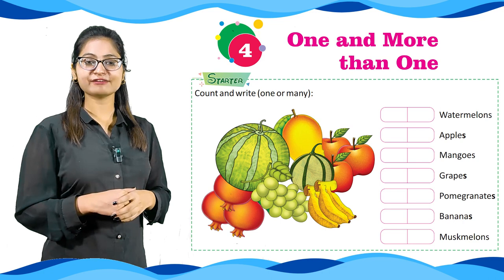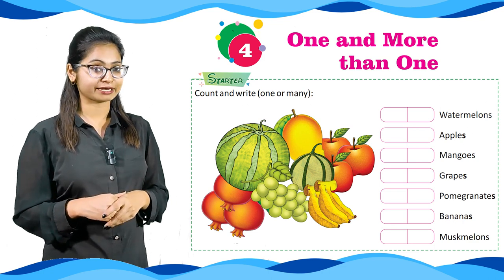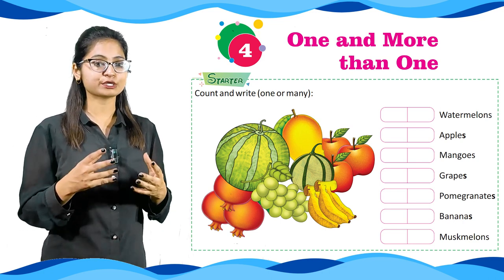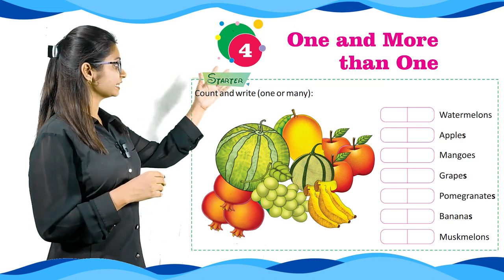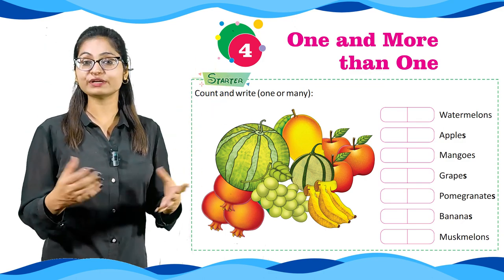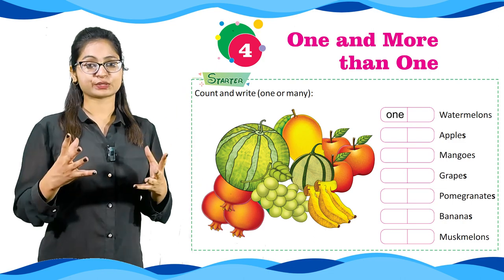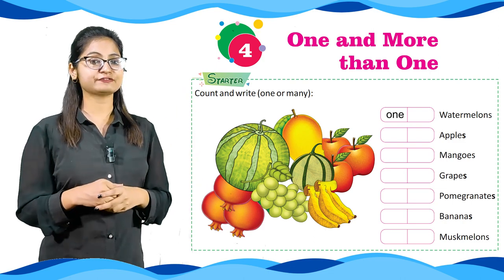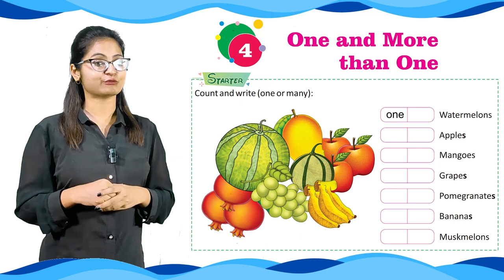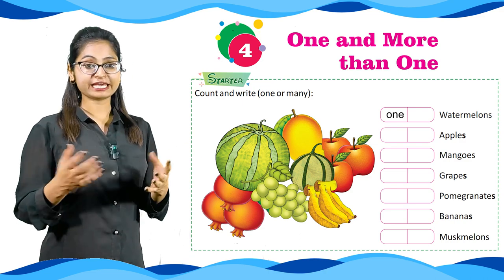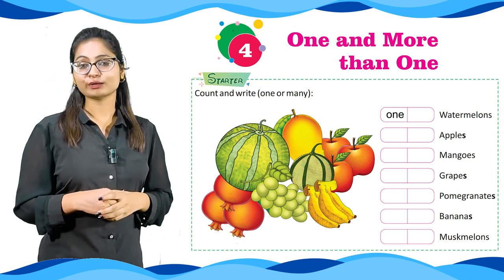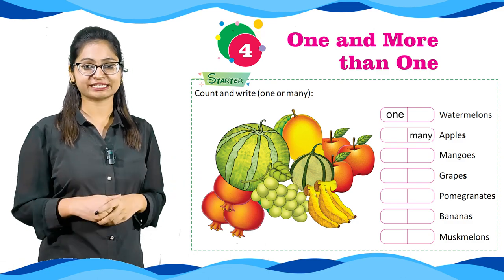We have given watermelon at number 1. Let's see how many there are. As we can see, there is one watermelon. So what would we write? One. Next, we have to see how many apples there are — one or many. We can see there are more than one apple. So what would we write? Many.